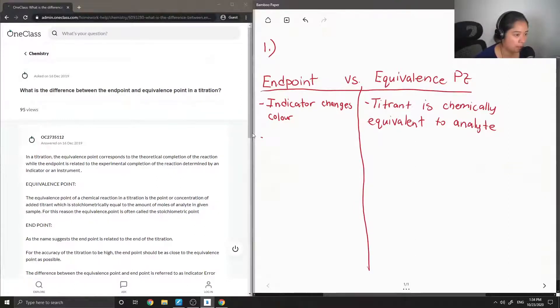So another point about endpoints is that weak acids have only one. However, with equivalence points, weak acids can have multiples.